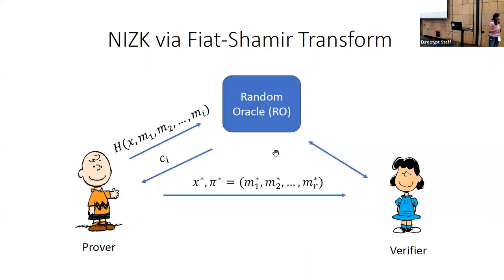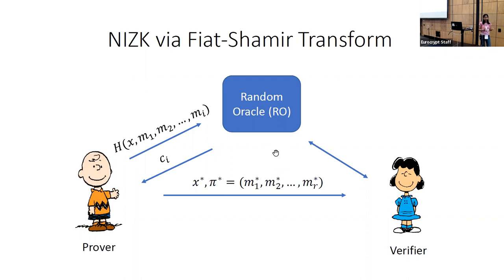In the real world, we like to make the interactive protocol non-interactive because it reduces the number of interactions with the verifier. One way to do this is using the Fiat-Shamir transform. All that the verifier was doing in a public coin protocol is toss coins and send them back — there's no internal secret. So we can replace that with a random oracle, and the prover pings the random oracle for challenges by asking for hashes of the statement and transcript so far, then sends the entire transcript to the verifier.